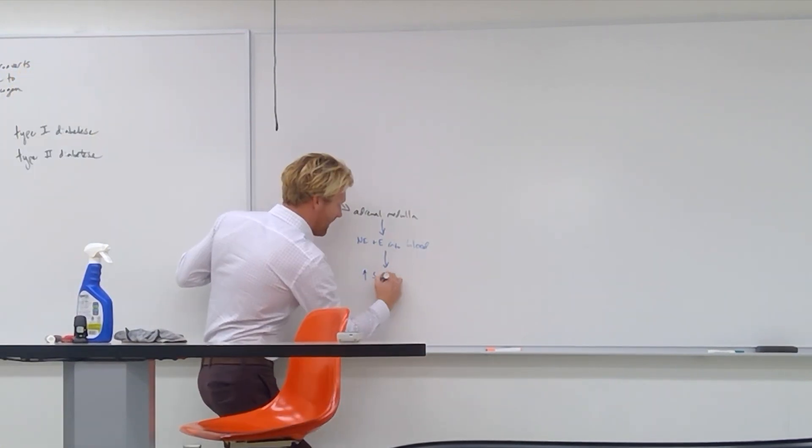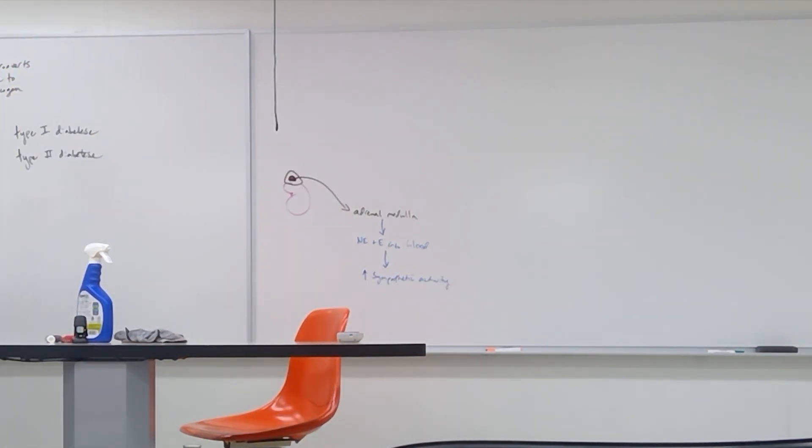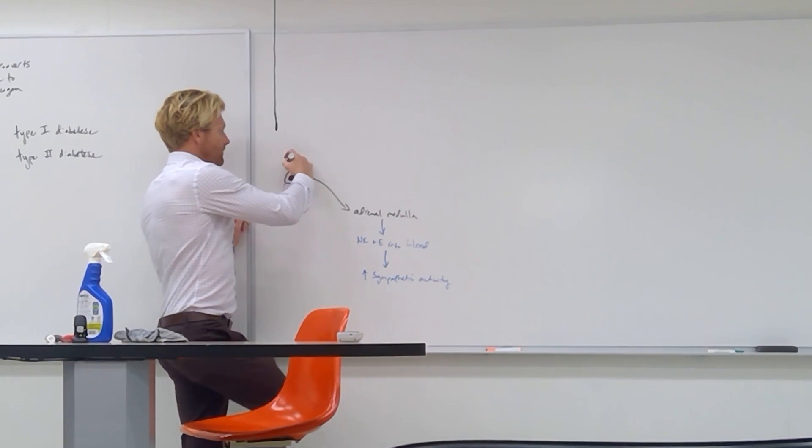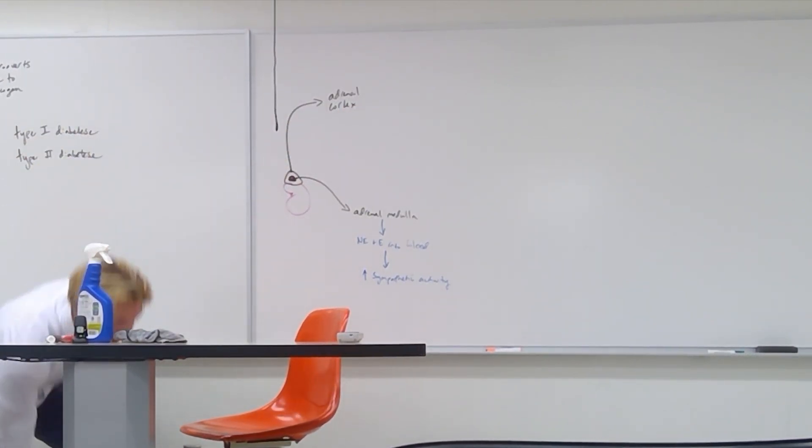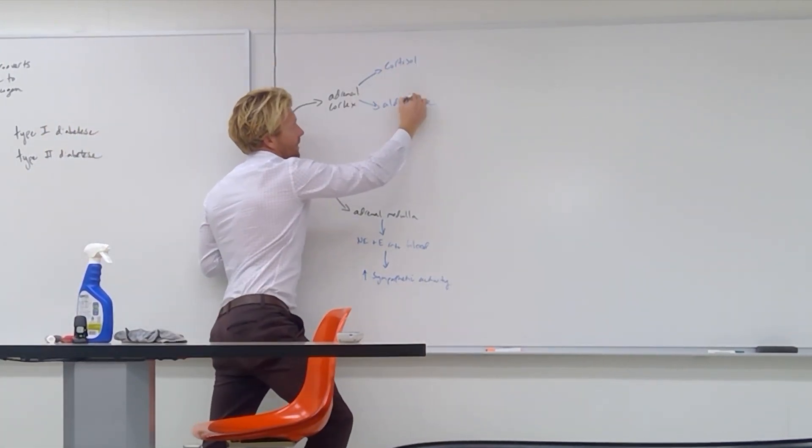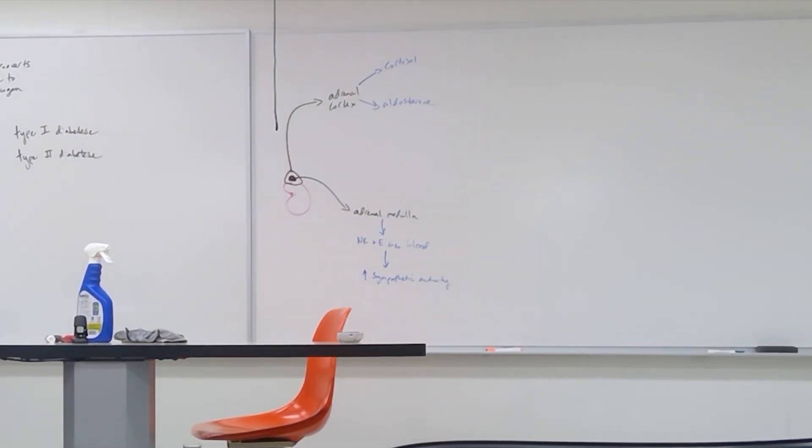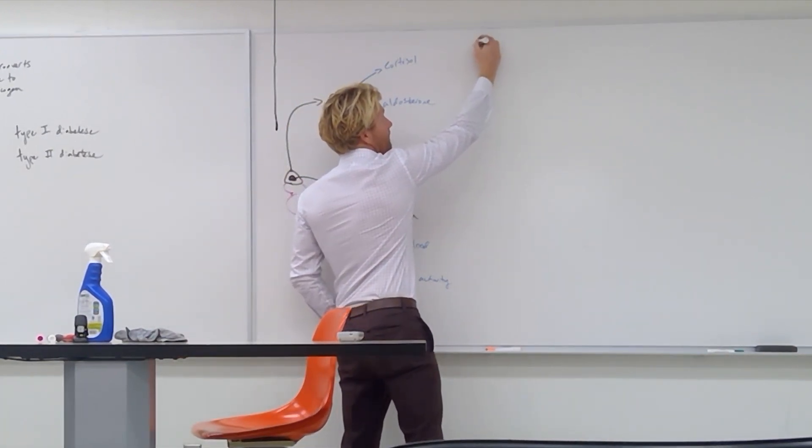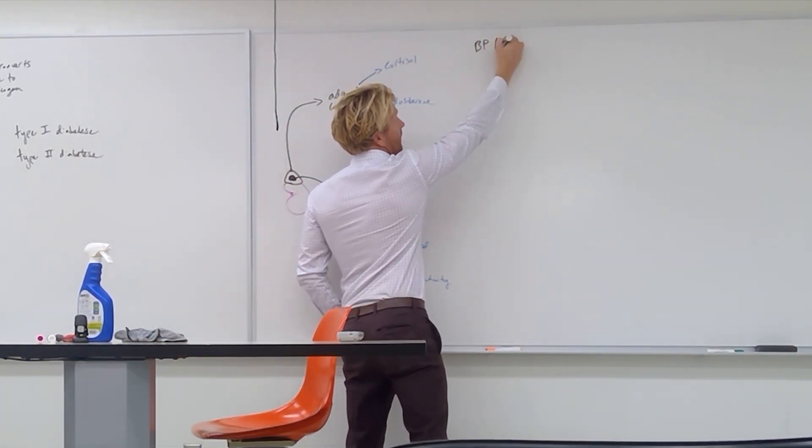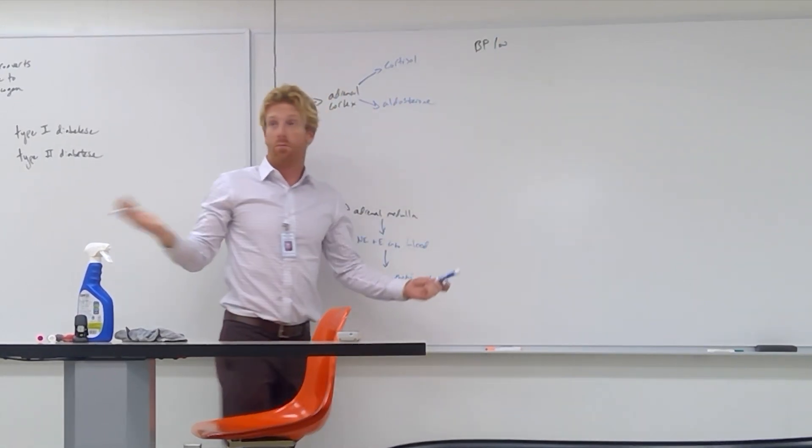And so the adrenal cortex releases two main hormones. And those two guys are cortisol and aldosterone. We'll start with aldosterone. Aldosterone is all about blood pressure. So let's say blood pressure in the body is too low. So BP is low. Blood pressure is too low.